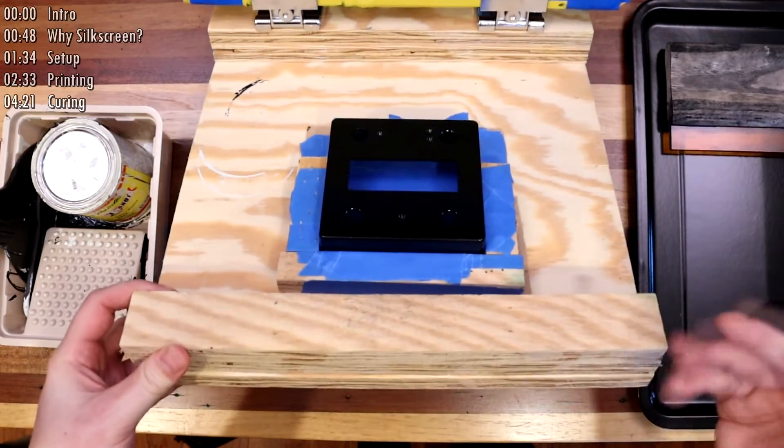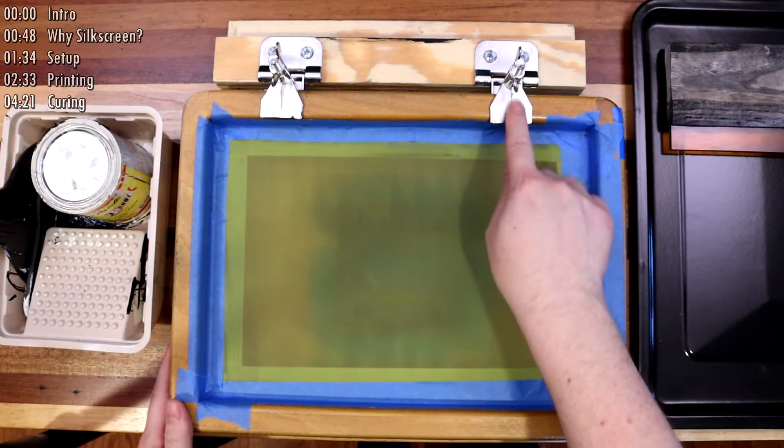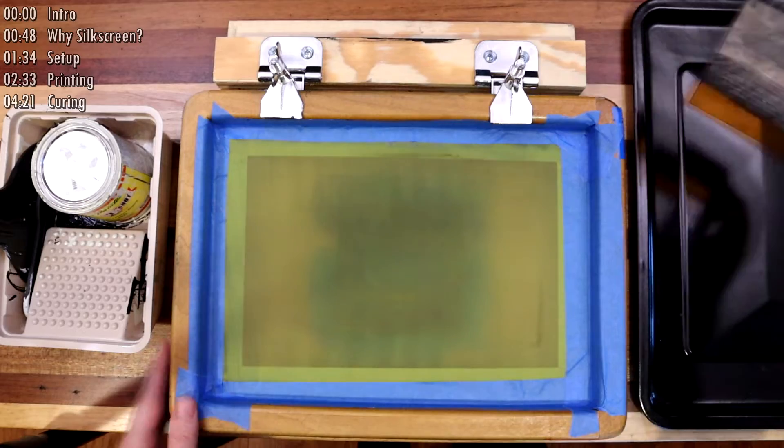To mount the pedal in the screen, I just make mine out of a couple pieces of wood air-nailed together, hinges that hold the screen on and allow it to be flipped up, a squeegee to spread the ink and push it through the screen.